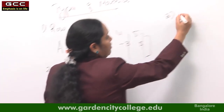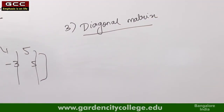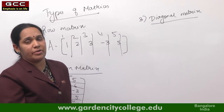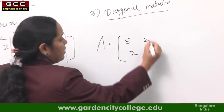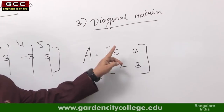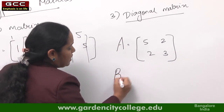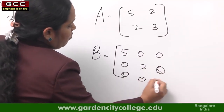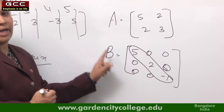The next type is a diagonal matrix. A diagonal matrix is defined as a square matrix in which only the diagonal elements are non-zero and all other elements are zero. A square matrix is a matrix in which the number of rows and columns are the same, for example A = [5, 2; 2, 3]. A diagonal matrix example: B = [5, 0, 0; 0, 2, 0; 0, 0, -1], where the principal diagonal elements are non-zero and all other elements are zero.